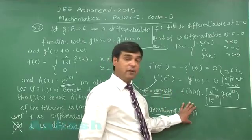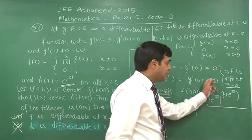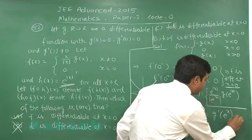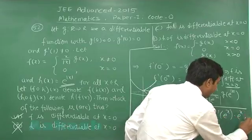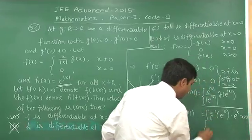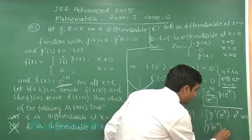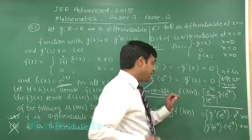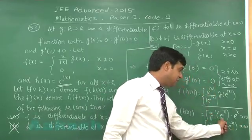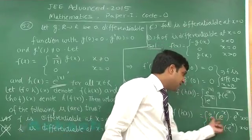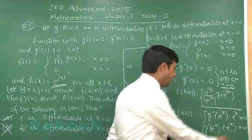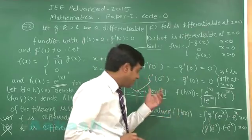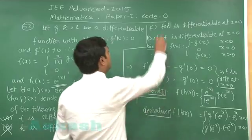When we look at the derivative, it becomes g'(e^x)·e^x when x is positive and g'(e^{−x})·(−e^{−x}) when x is negative. When x approaches 0 from the right, we get g'(1), which is a non-zero quantity — a positive number — while from the left it is a negative number. So the derivative of f(h(x)) does not exist at x = 0.